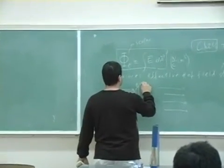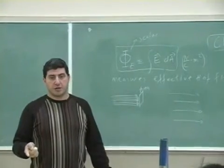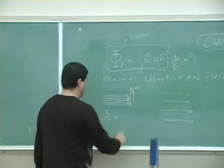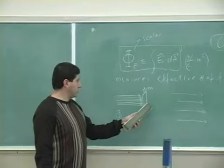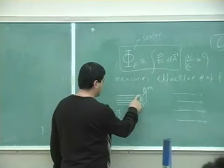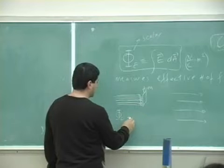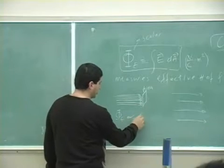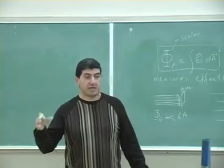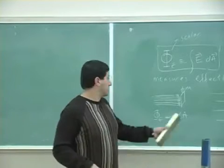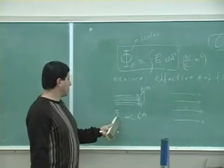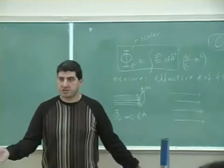The surface has some area. If I don't tell you the field strength E or the area, the only thing you can really say is that six field lines are going through that area. So the flux is some number proportional to 6A. I don't really know the field strength, but six lines are going through that, so the flux must be proportional to 6.